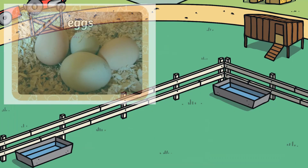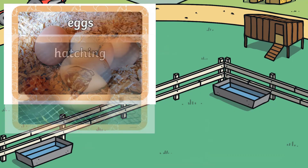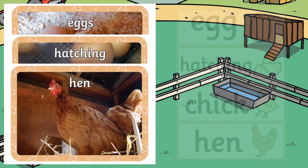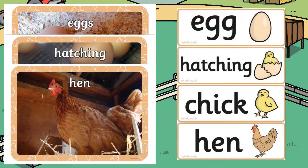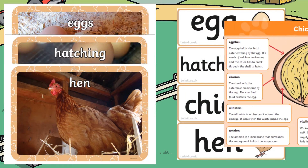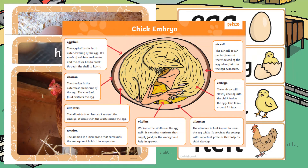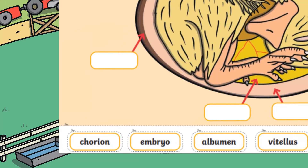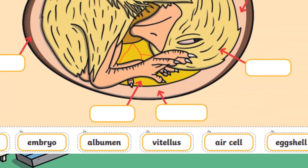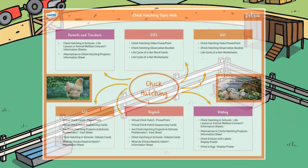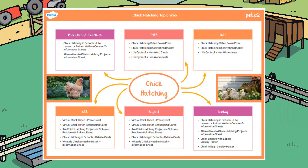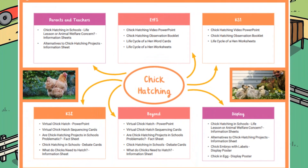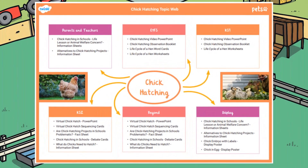We have a huge variety of display resources including our life cycle of a hen display photos, our hen word cards, and our chick embryo posters including labels. You can even get your learners to make their own chick embryo posters with our cut and stick activity. Finally, if all of these resources have inspired you to teach a unit all about chick hatching, then our chick hatching topic web has lots of ideas for you to engage learners.